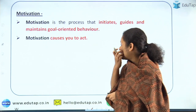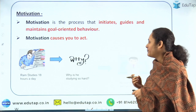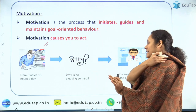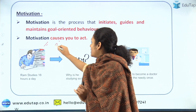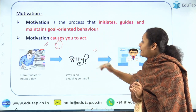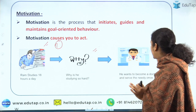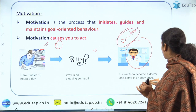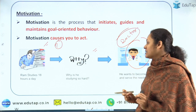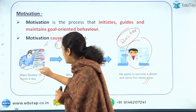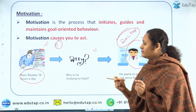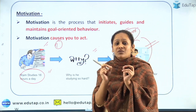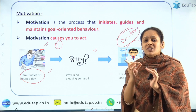Now, what is motivation in general? Before jumping into the technical definition, let us take this example. Let's say there is Ram who studies 18 hours a day. The first question would be why is he studying? When you talk to him, you get to know he is studying hard because he wants to become a doctor, and why does he want to become a doctor? Because he wants to serve the society and the needy ones. That is why he studies 18 hours a day. So the inner factor making him study so long is the fact that he wants to serve the society by becoming a successful doctor. This is what motivation in general is.